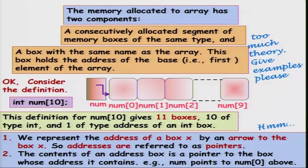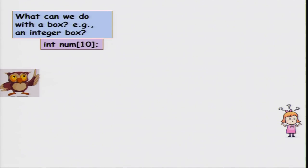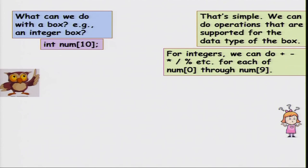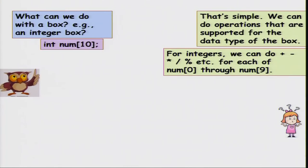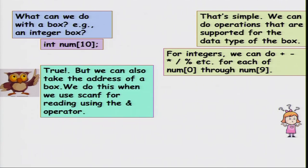We will see what that means and what we can do with pointers. Let us step back and ask: what can we do with a particular integer variable in memory? That is very simple — you can scanf into that box, you can print the value in that box, you can do arithmetic operations like plus, division, modulo and so on, for each of the boxes from num[0] through num[9]. But we will also see a new operation: you can take the address of a box.